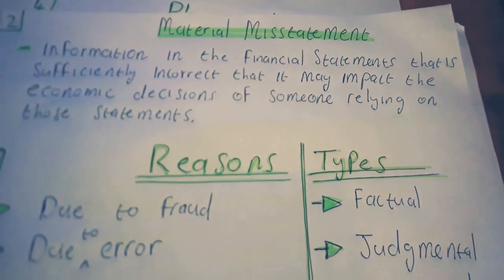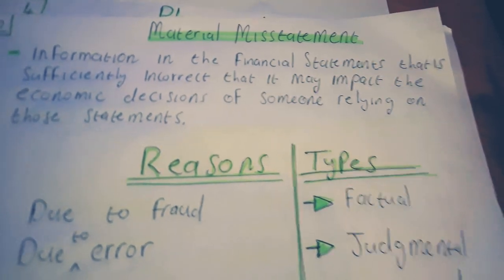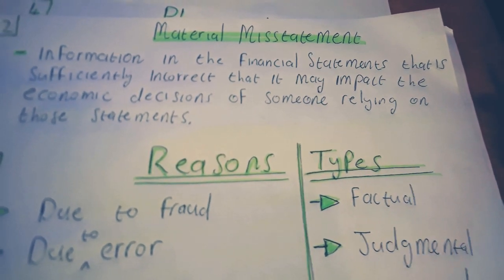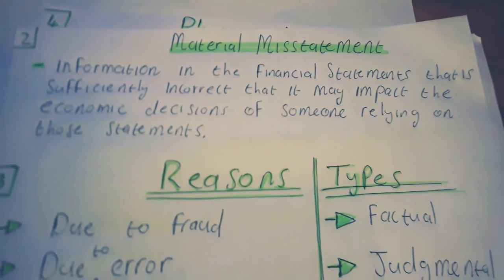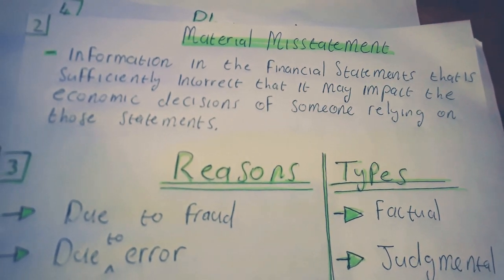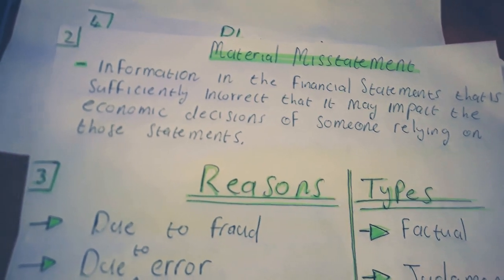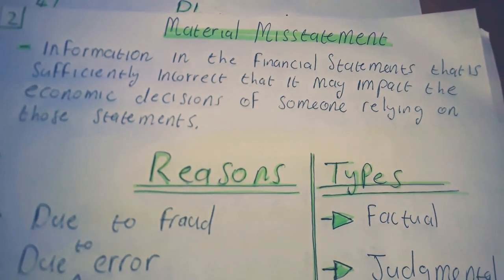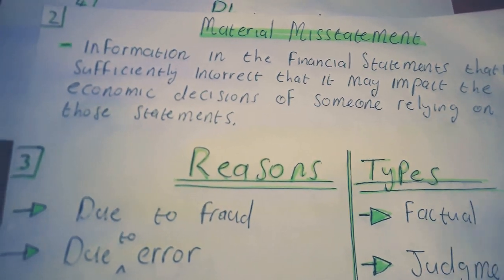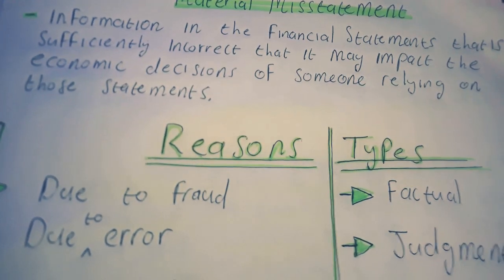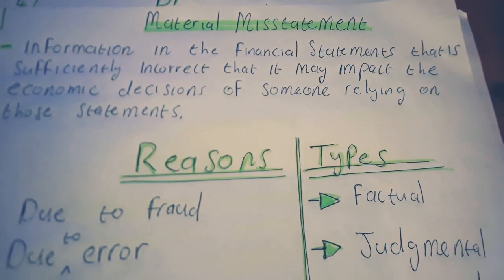When we look at materiality we also need to look at misstatements — this is going to come up a lot in your auditing studies. A misstatement is information in the financial statements that is sufficiently incorrect that it may impact the economic decision of someone relying on those statements. For example, a misstatement could be an incorrect sales revenue balance or an incorrect cost of sales. If revenue is overstated, a potential investor looking at the statement may think they're going to be making money, which actually impacts their decision-making.